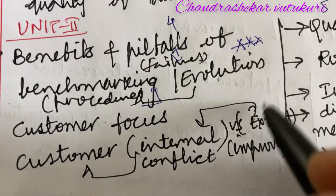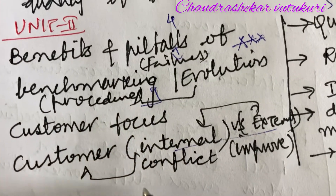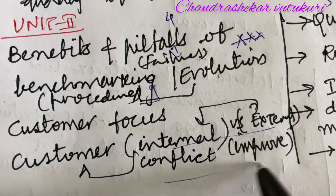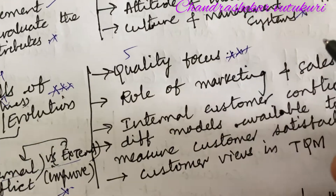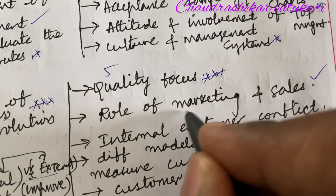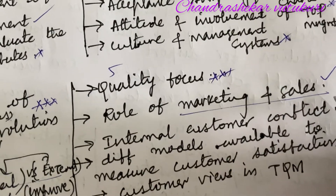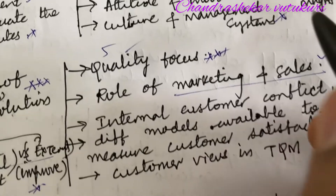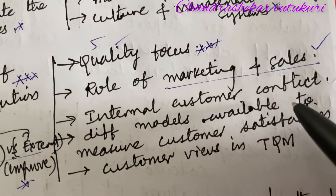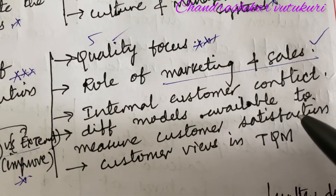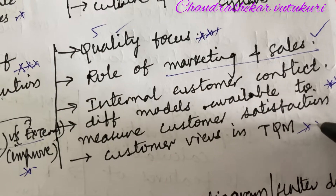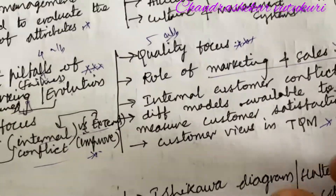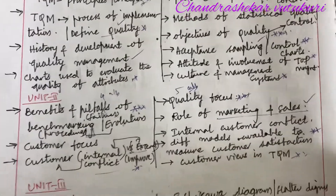Customer focus, internal and external customer focus, internal customer conflict and how it is going to improve, and quality focus is set as a short question. The role of marketing and sales — related to marketing and sales, you are going to get one question for sure in the form of 5A or 5B. Internal customer conflict and the different models available to measure customer satisfaction — explain the term. Customer views in TQM may be the short question.